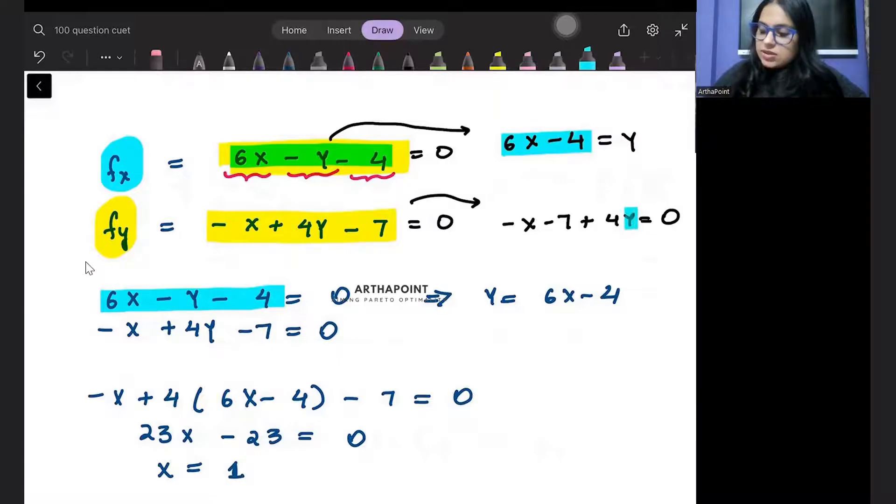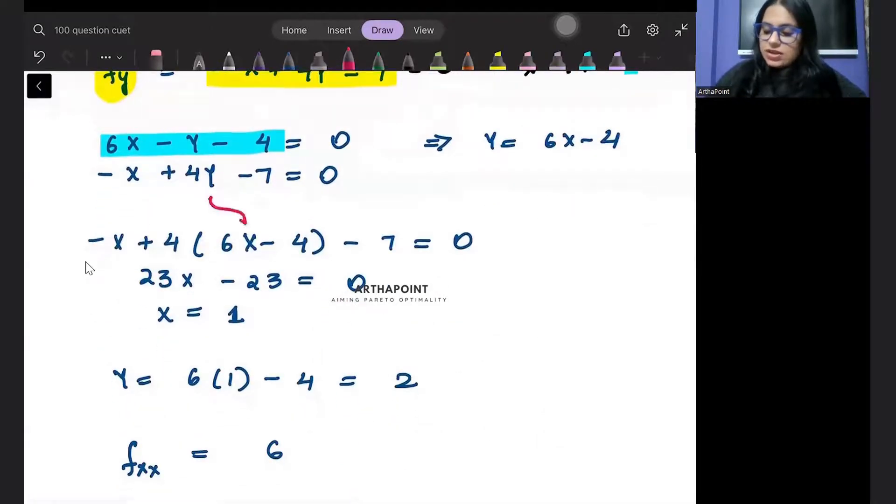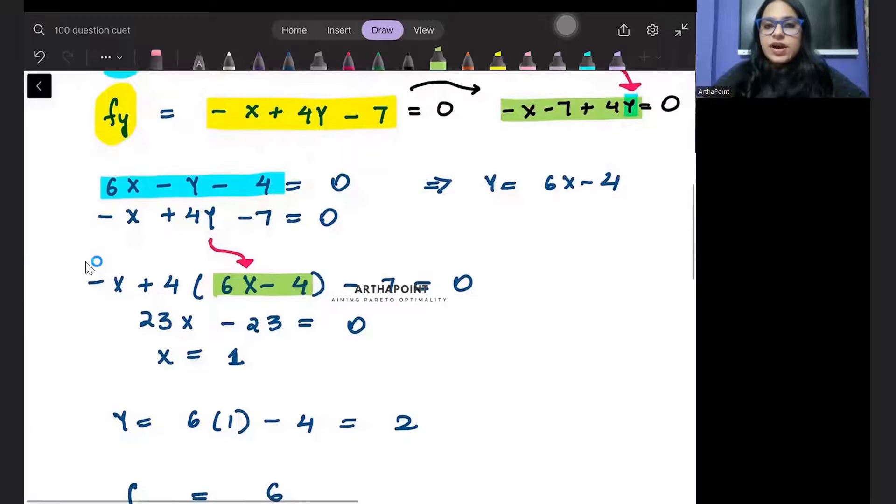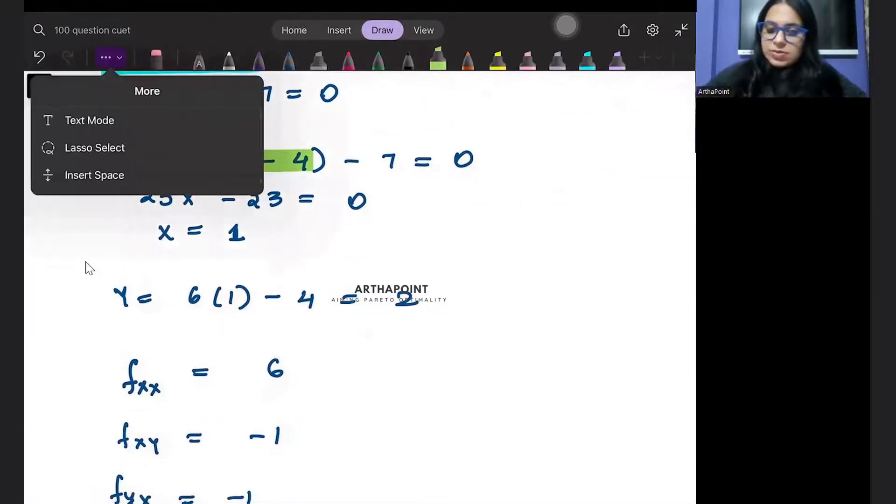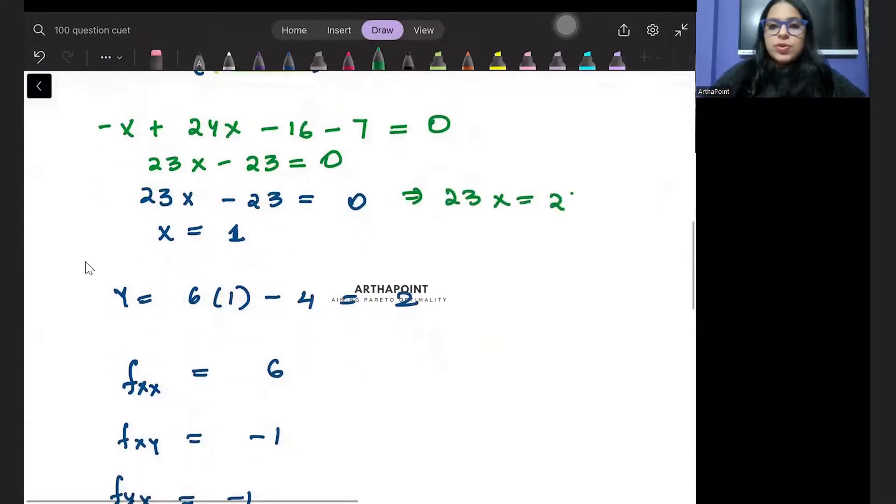So instead of y here, I can just plug the value 6x minus 4. I can just go ahead and plug that value. Instead of y, I will just plug the value 6x minus 4 in the equation minus x minus 7 plus 4y. We can just open this up. Minus x plus 24x minus 16 minus 7 is equal to 0. So you get 23x minus 23 is equal to 0. So you will get 23x is equal to 23. So x value will be 1. You will get x as 1.